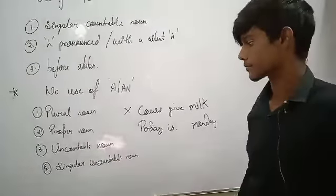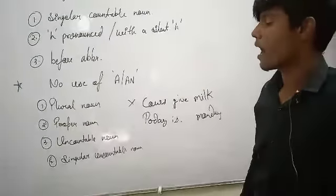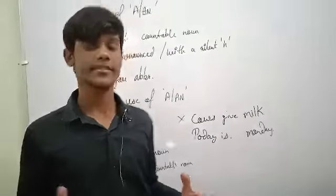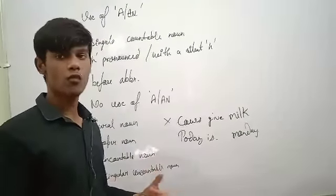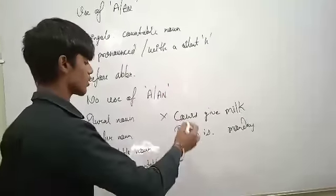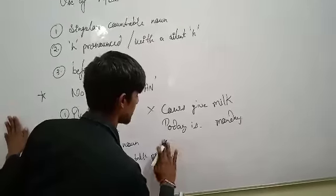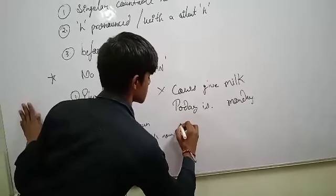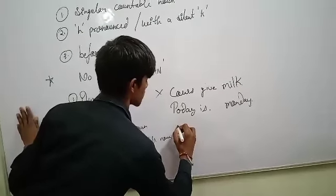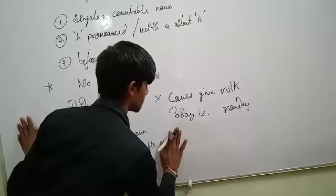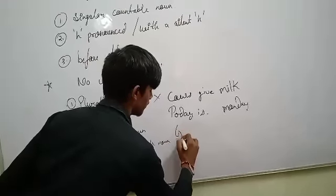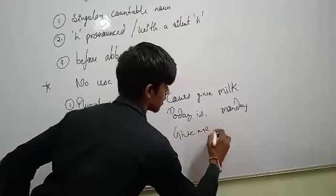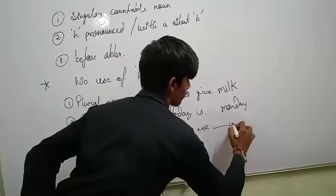Uncountable — uncountable means you cannot count it. Like for example, water. There is no article before water. 'Give me water' — you don't use an article before uncountable nouns.